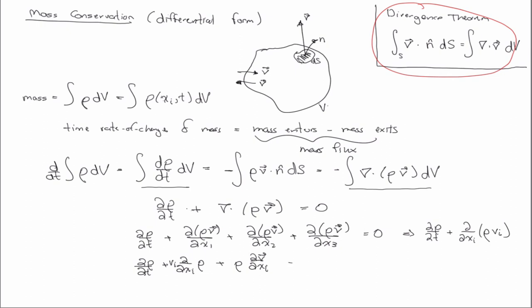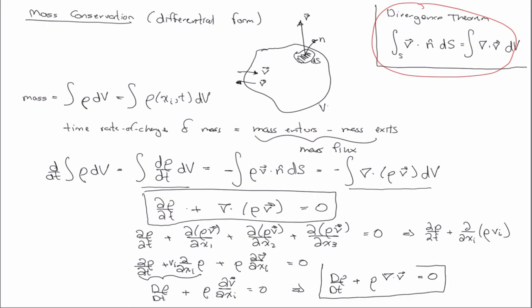And what you might notice with that is that this thing is the definition of the material time derivative of rho. So it should be on the previous page in your notes. And so this is another way to write this. All right. So we have this.